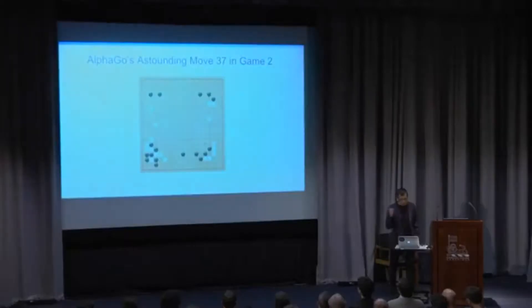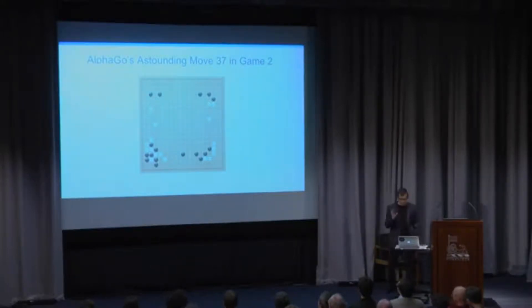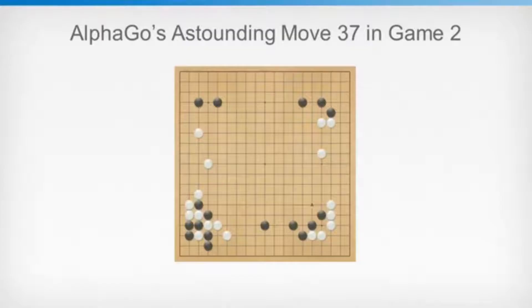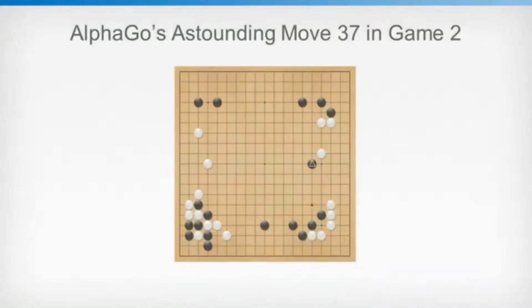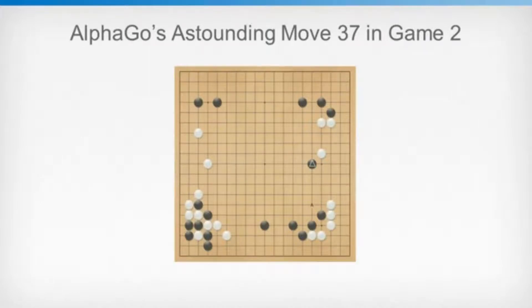It actually created what seemed to be new ideas, and I want to take you through one of those ideas. Here's a position from Game 2, Move 37, which is my favorite move from the whole series of matches — I think it will go down in Go history. In this position, AlphaGo is playing black and Lee Sedol is playing white. AlphaGo played this move on the right-hand side here, in the middle of the right-hand side of the board, indicated with the white triangle. That was Move 37.